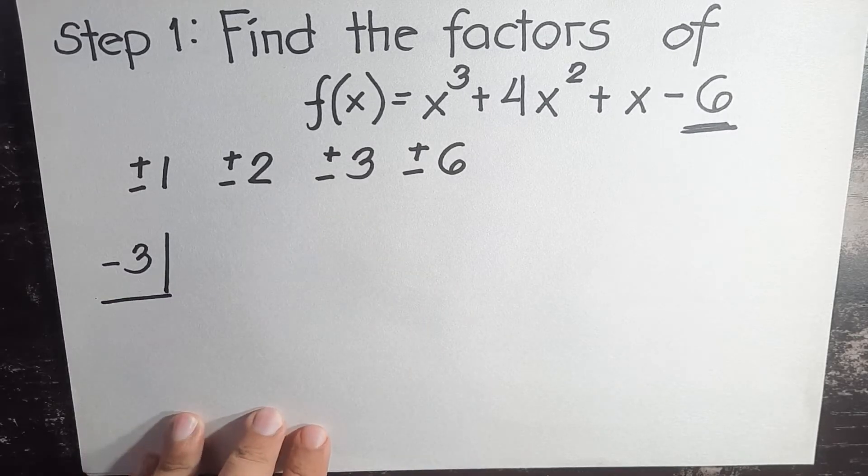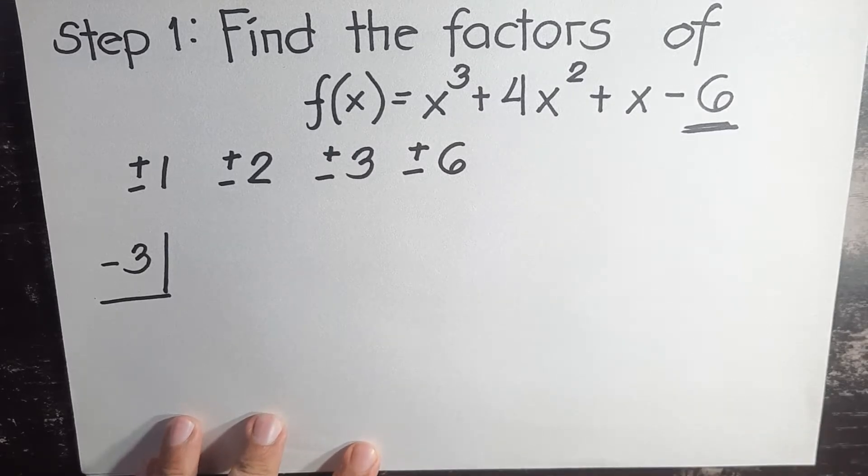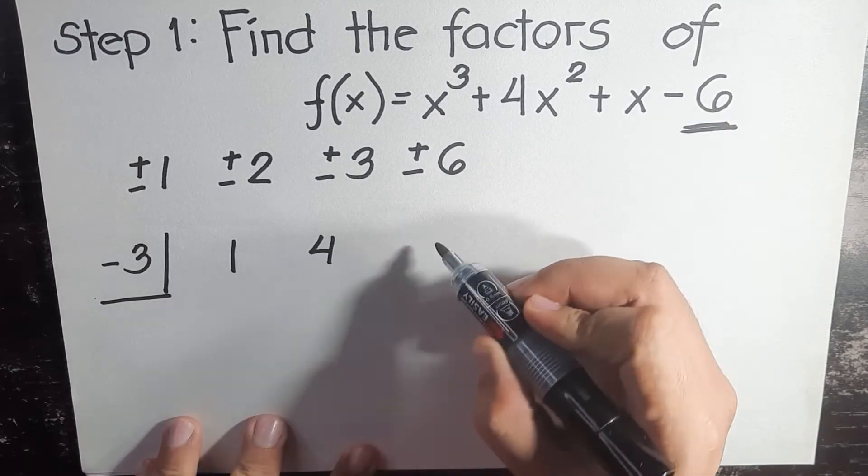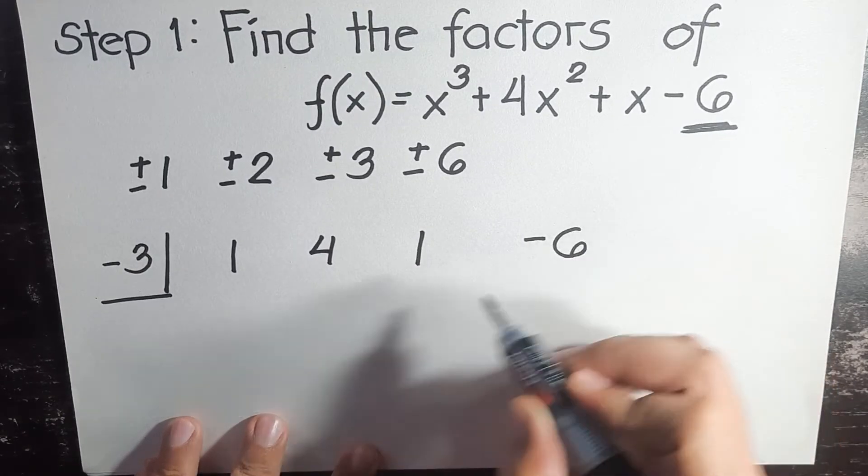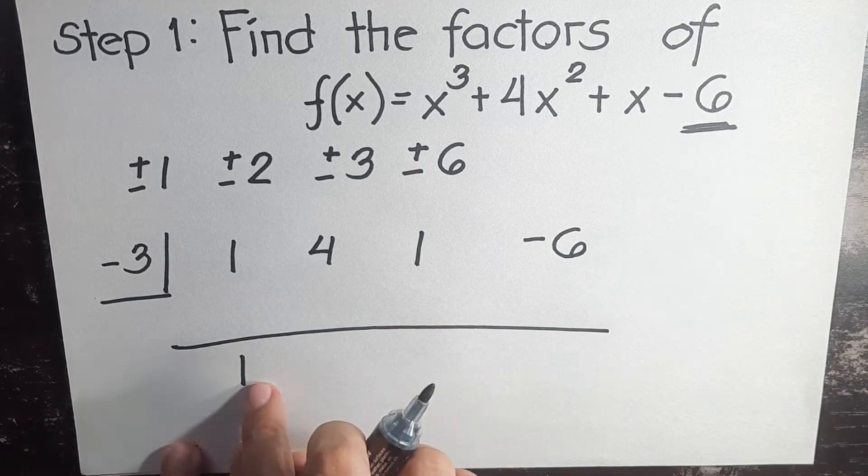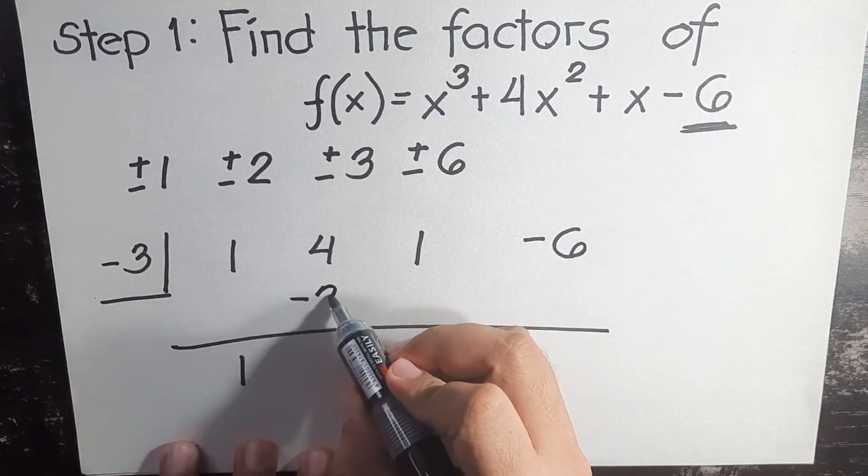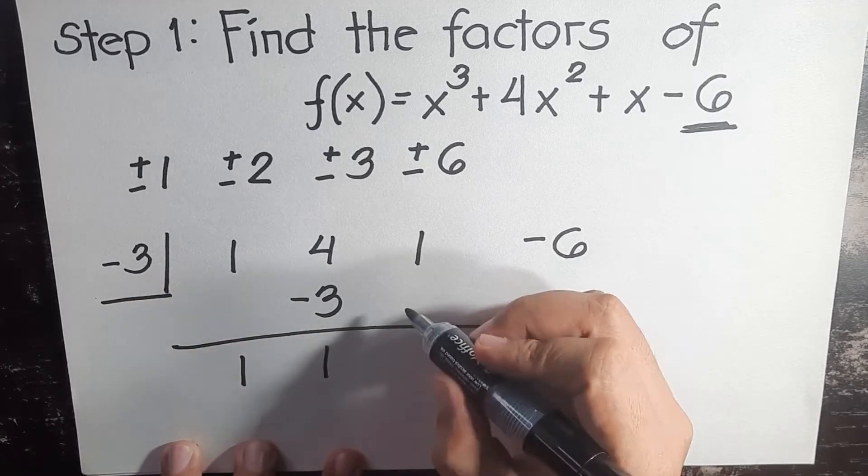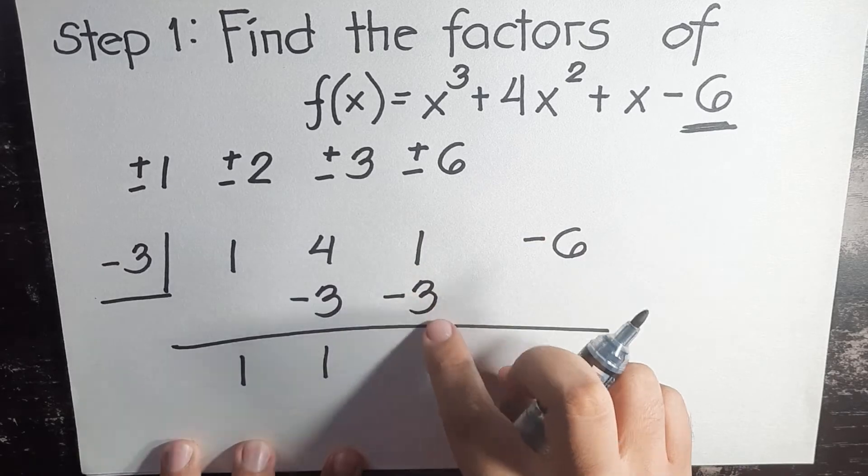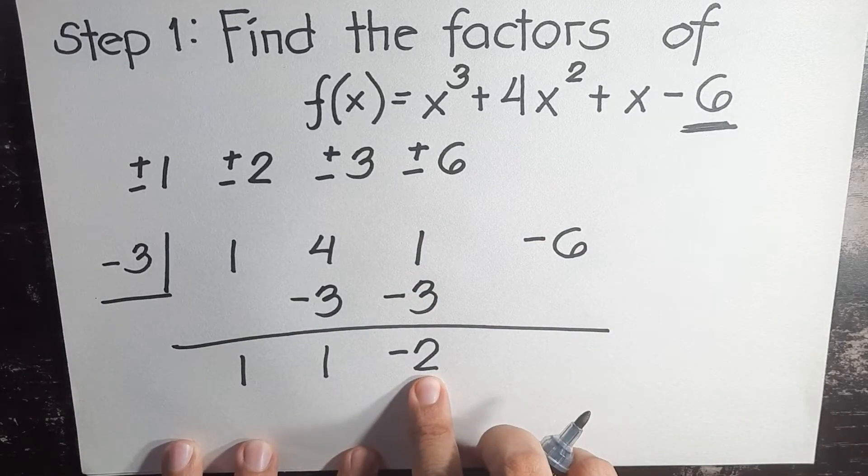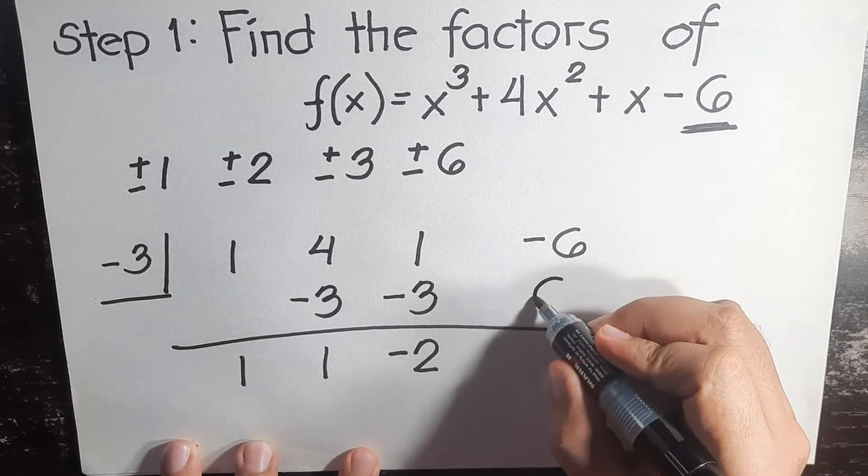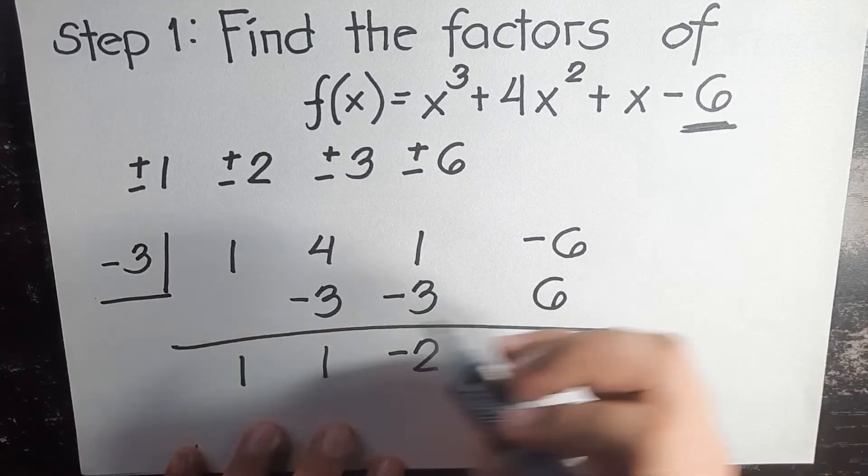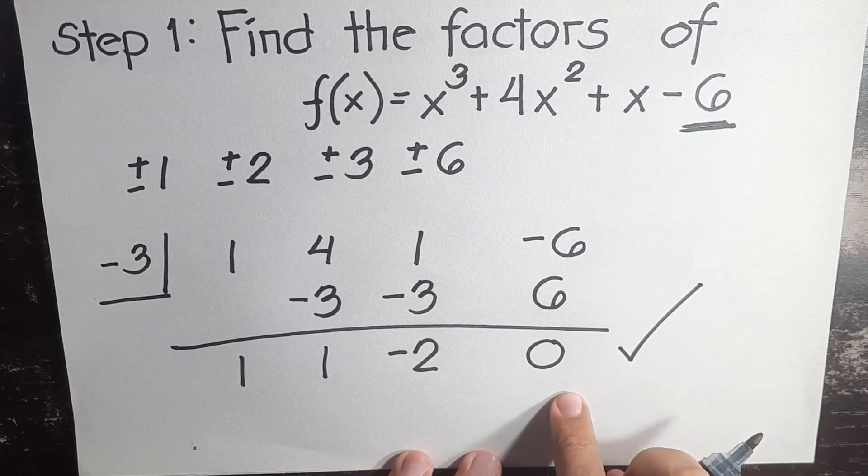In order for you to proceed with this tutorial, you need to make sure that you've already watched how to do synthetic division. Bring down all the numerical coefficients: one, four, one, negative six. Bring down the first term. One times negative three, you have negative three. Four minus three, one. One times negative three, you have negative three. One minus three, negative two. Negative two times negative three, you have positive six. Negative six plus six, zero.